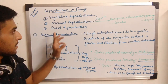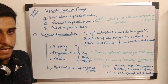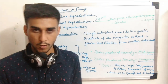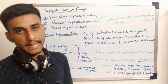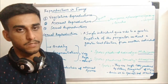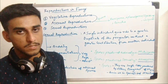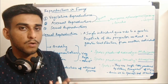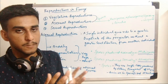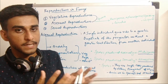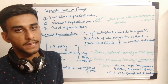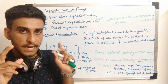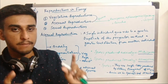Some of the asexual spores produced by fungi are zoospores, aplanospores, and conidia. Aplanospores are also known as sporangiospores because they are produced in a specialized reproductive part of the hyphae.